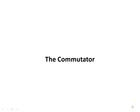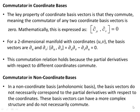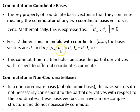Now the commutator — this is what was not covered in the last video. The key property of coordinate basis vectors is that they commute: partial derivatives commute, meaning the commutator of any two coordinate basis vectors is zero. Mathematically, [∂_μ, ∂_ν] = 0. For a two-dimensional manifold with coordinates u and v, the commutator [∂_u, ∂_v] = ∂_u ∂_v − ∂_v ∂_u = 0, because partial derivatives with respect to different coordinates commute.